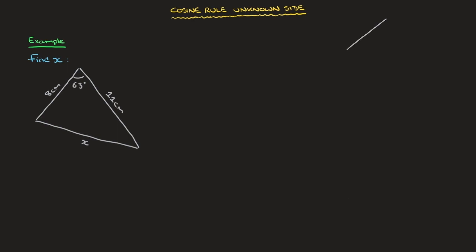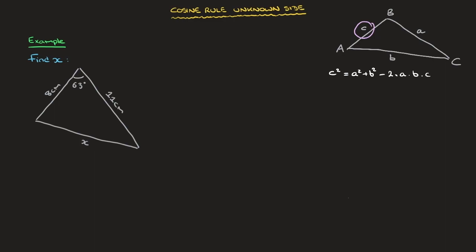Here's the idea. Let me start by drawing a triangle, something completely generic, like so. I'll label that capital A, capital B, capital C, with side lengths lowercase a, lowercase b, and lowercase c. Now let's say we had to find the side length c. The cosine rule states that c squared is equal to a squared plus b squared minus 2 times a times b times cosine of the interior angle at C.